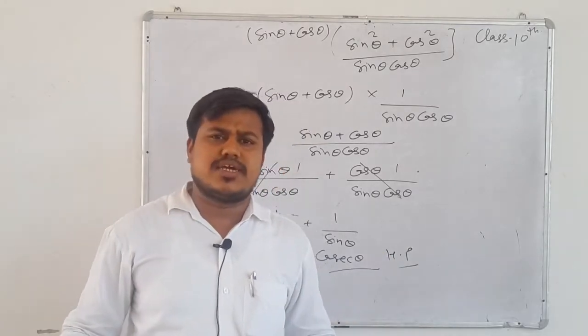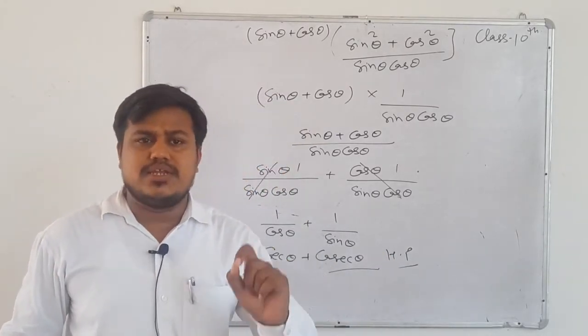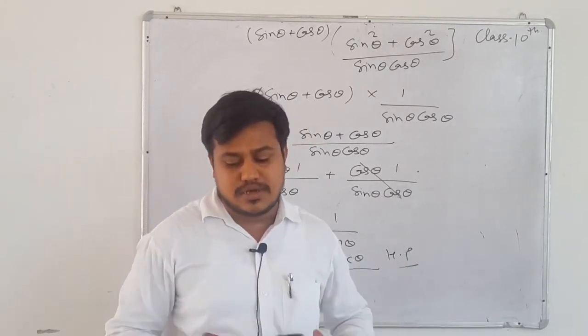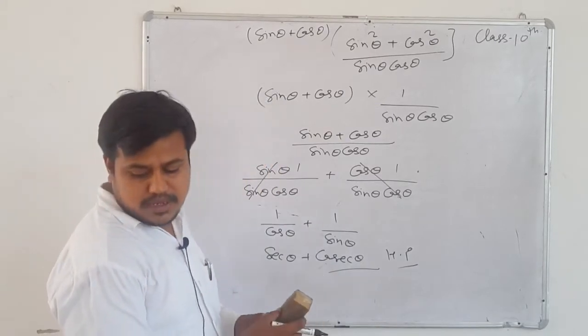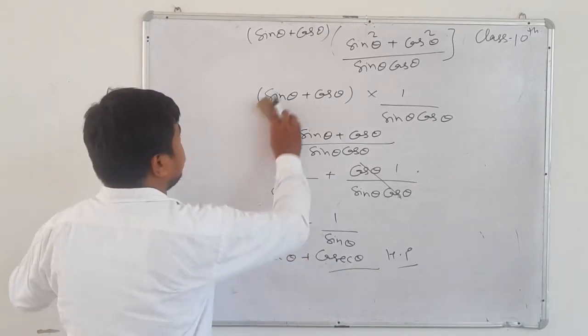So how did we start this question? We changed tan θ and cot θ into sin θ/cos θ and cos θ/sin θ. Easy? Then question number 19.